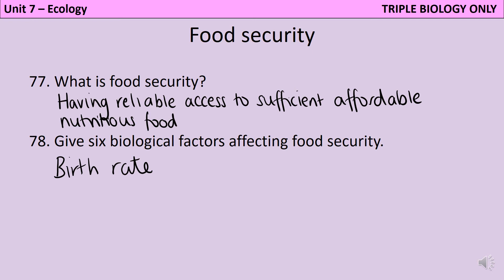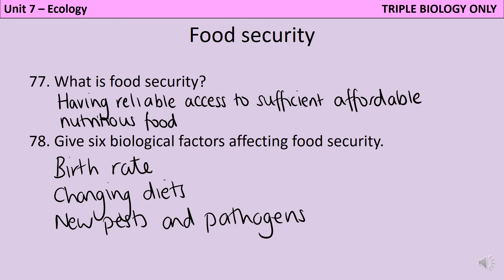The second biological factor is changing diets. As countries become more affluent, people eat more meat, but eating meat isn't particularly sustainable — it takes a lot more land to produce a certain number of calories in a meat-based diet than in a vegetarian diet. The third factor is the large amount of yield being lost to pests, like aphids and other insects, and to pathogens such as diseases, which together contribute to about 10 to 15 percent of world crops being lost each year.